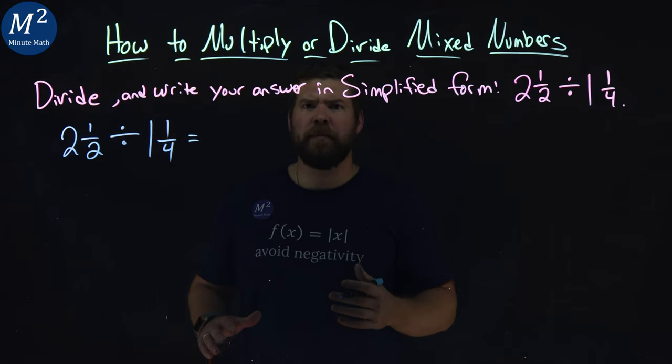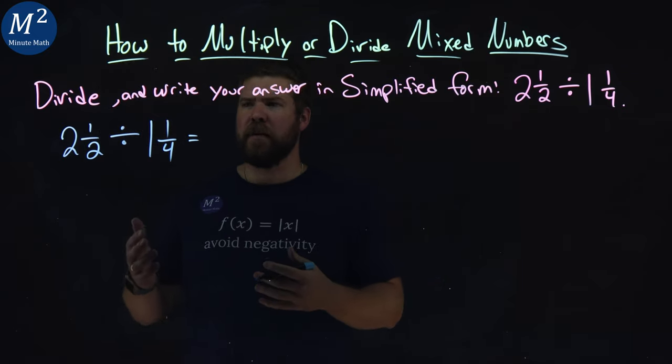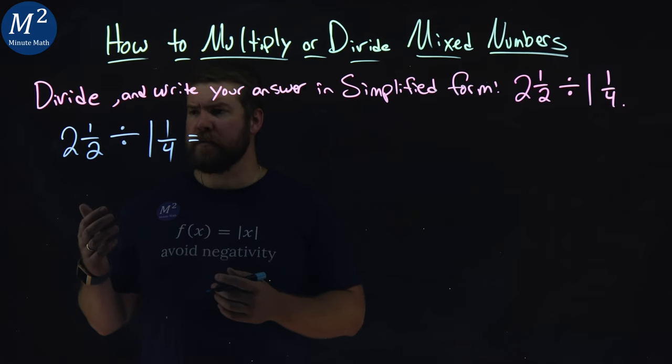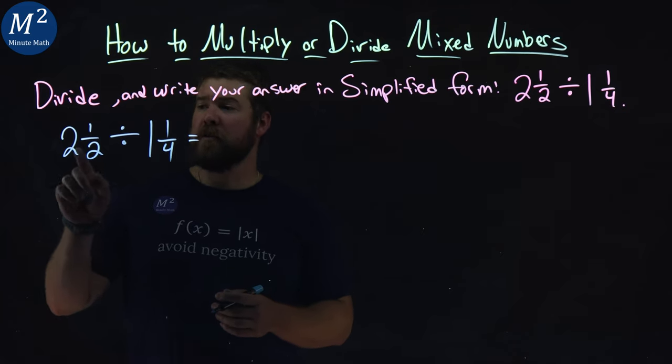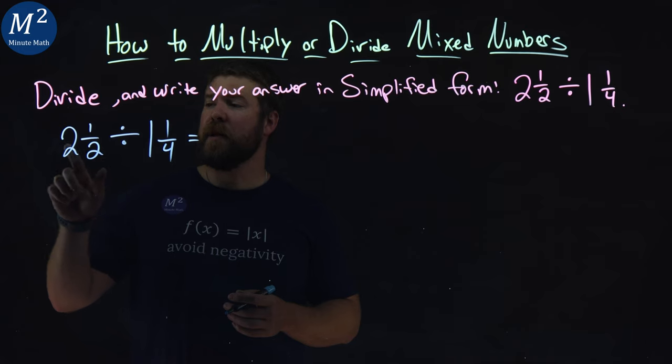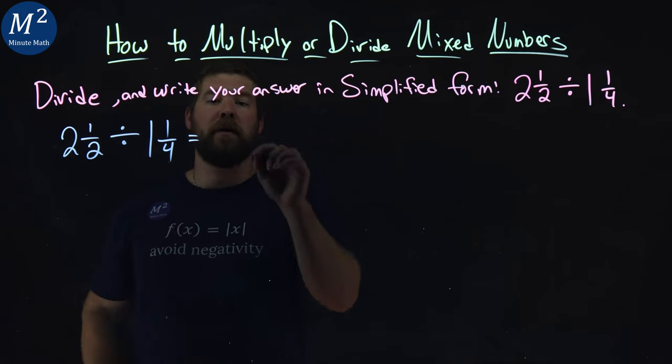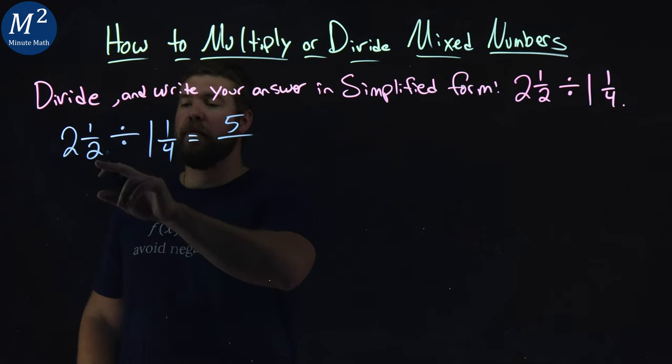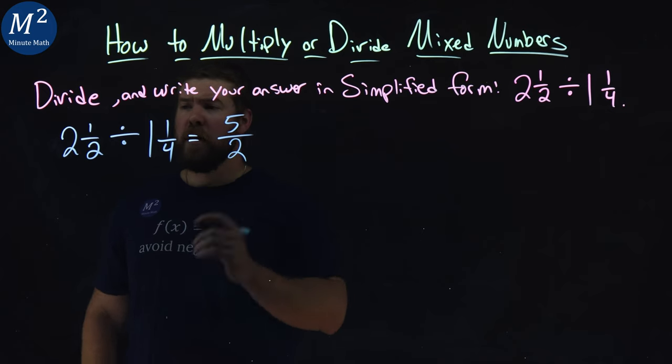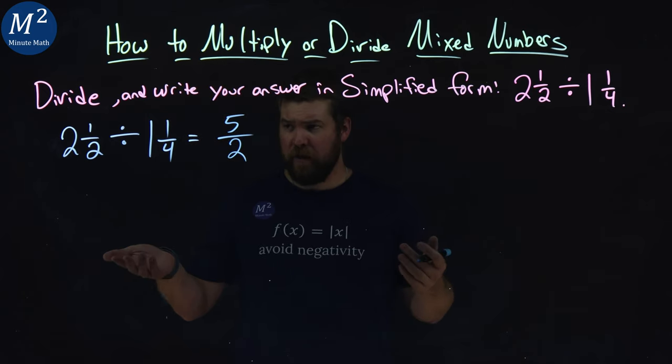My first step here is to convert these into improper fractions. So to do that, I take two and one half. I take two times two, which is four, plus one, I get five. And keep the denominator of two. So two and one half is equal to five halves.